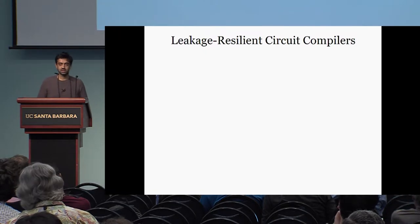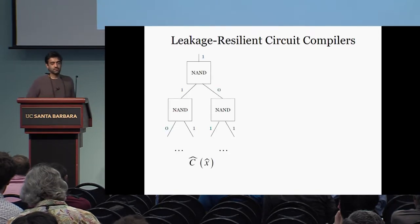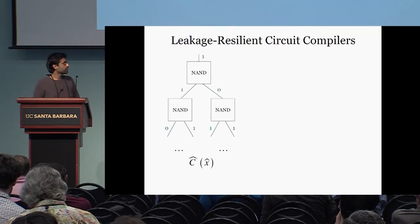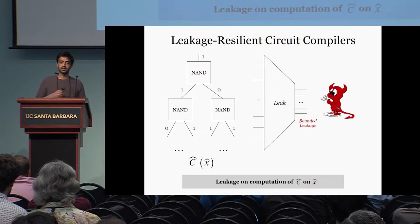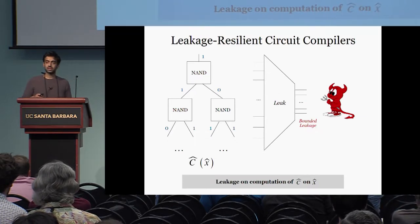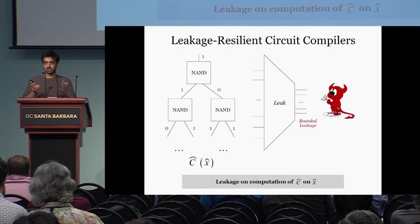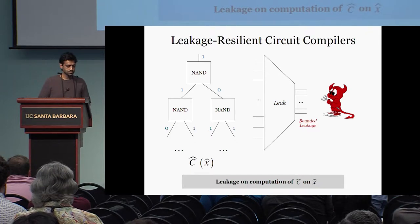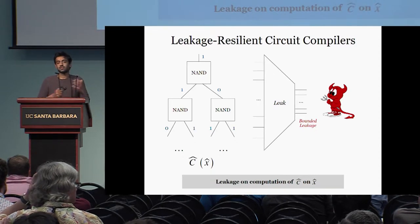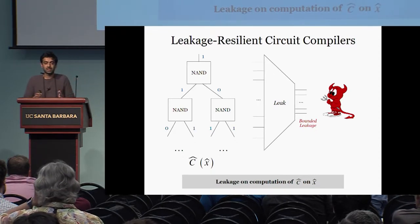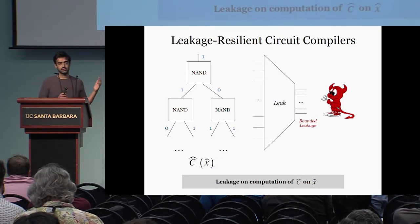So now let me explain what leakage-resilient circuit compilers are. The security experiment is as follows: we have the computation C-hat on X-hat, with values assigned to the wires. The adversary is allowed to submit a leak function that operates on all the wire values in this computation and outputs some short information. Intuitively, we want that the adversary doesn't get any information about the input. We allow the adversary to know the circuit, but we really want to hide the input from the adversary.